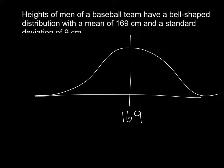So what that means is by the empirical rule, if I'm one standard deviation above, meaning 169 plus 9, so 169 plus 9 gives me 178. 169 minus 9 gives me 160. By the empirical rule, that says this is 68% of our data.